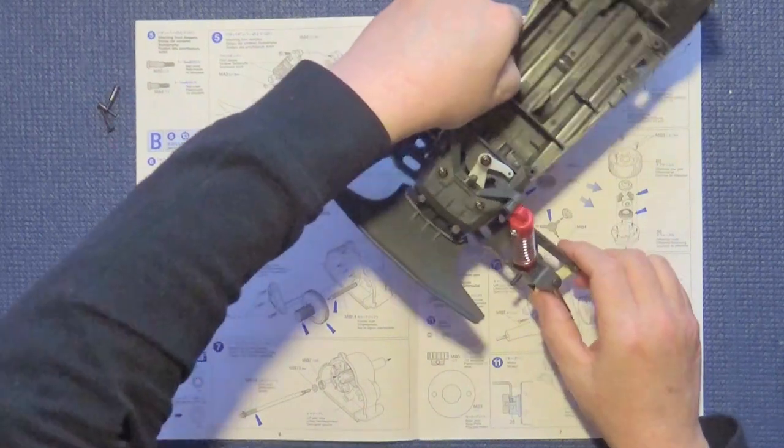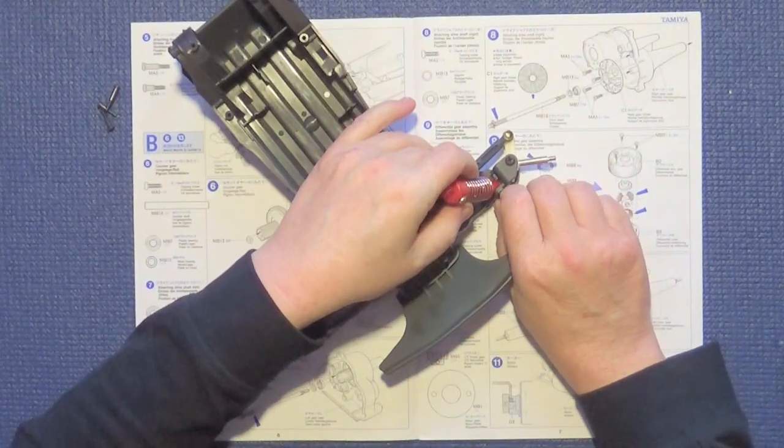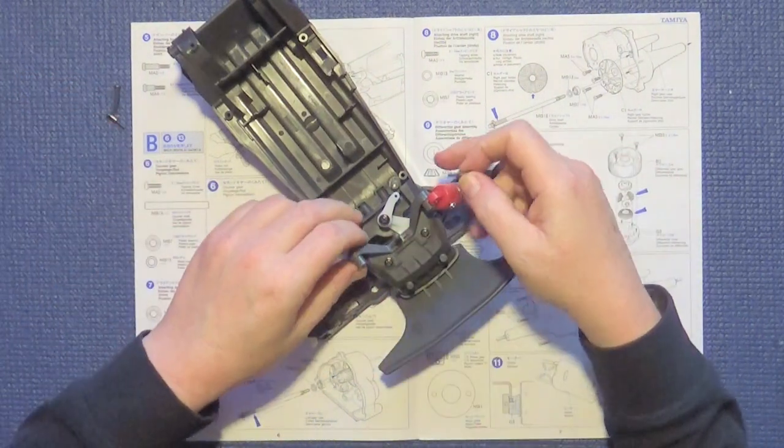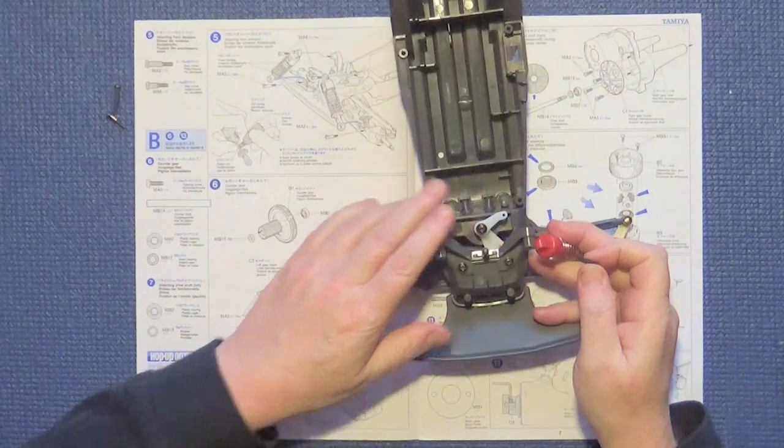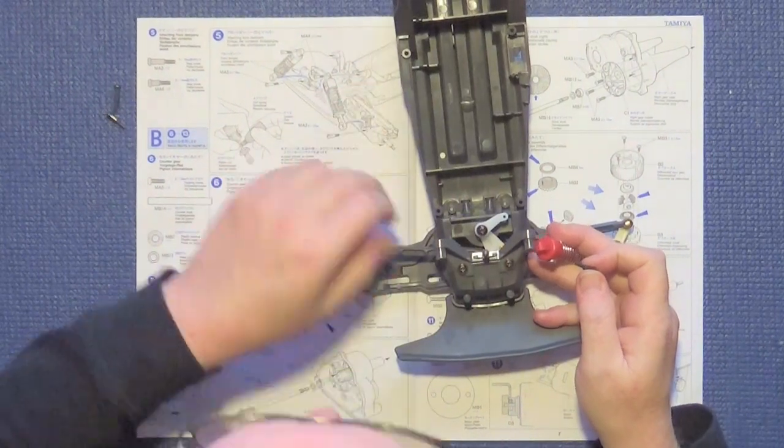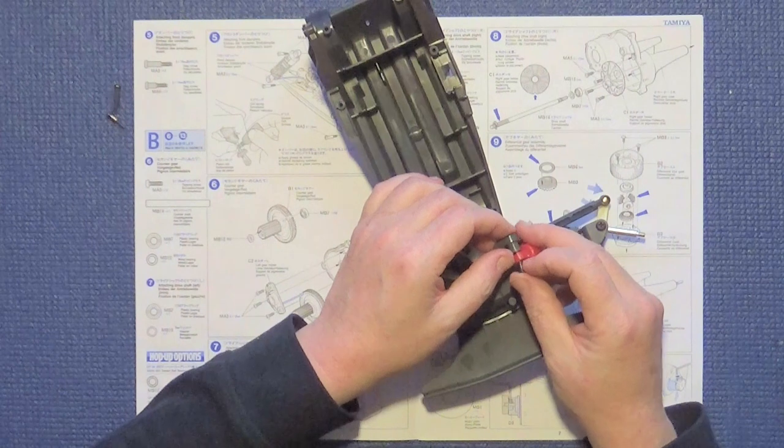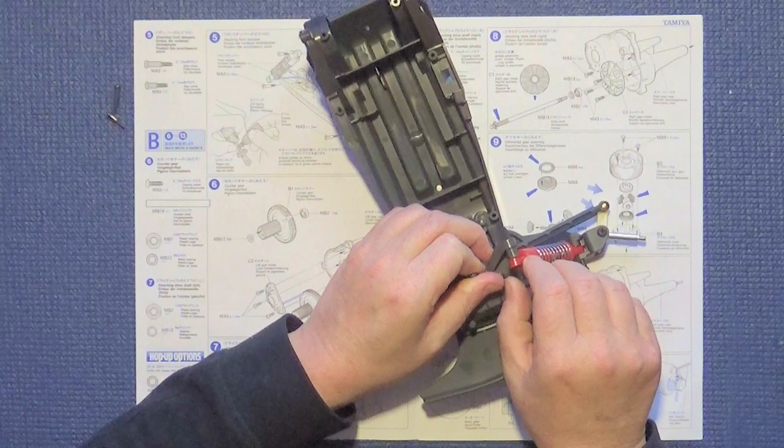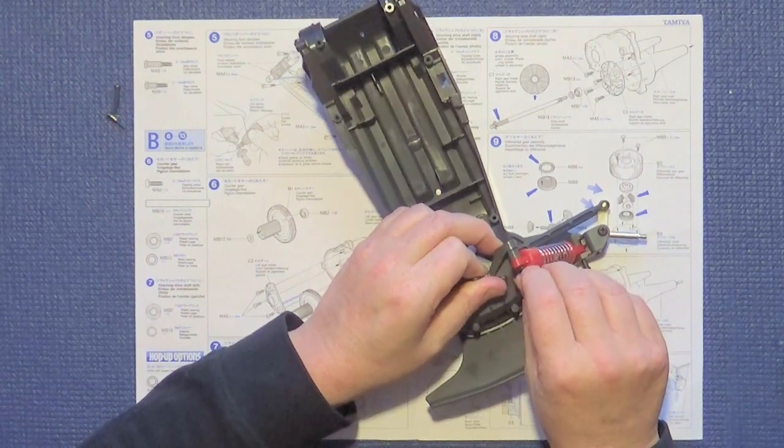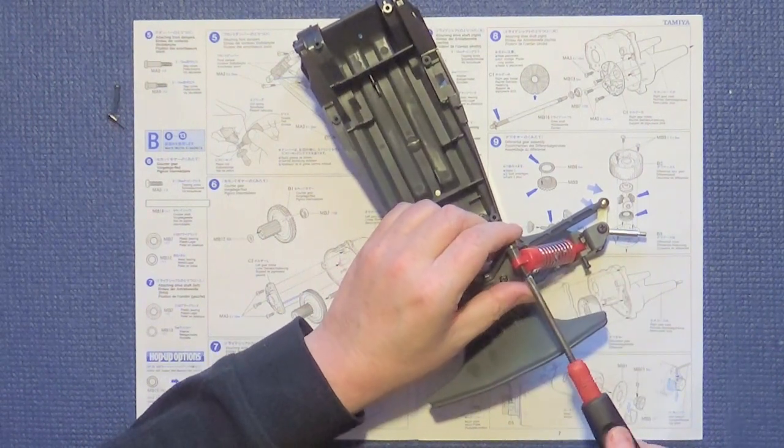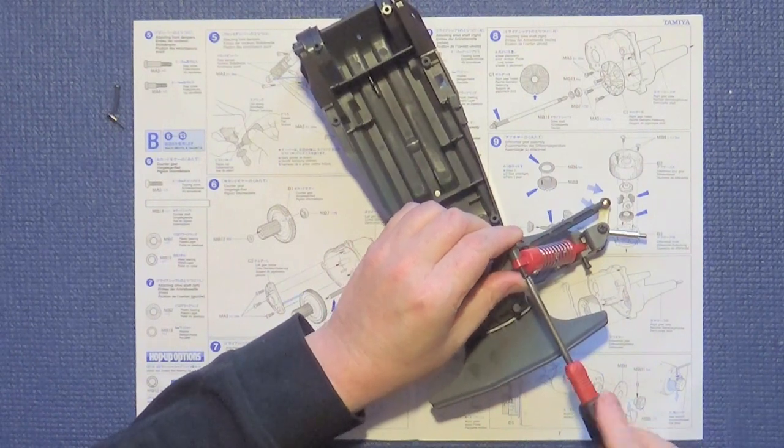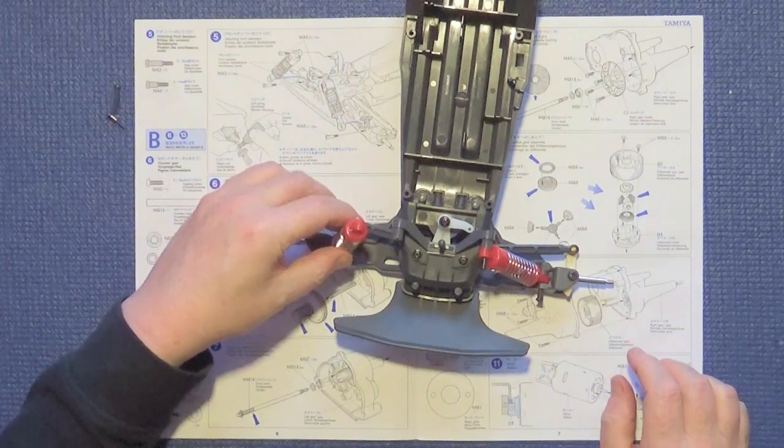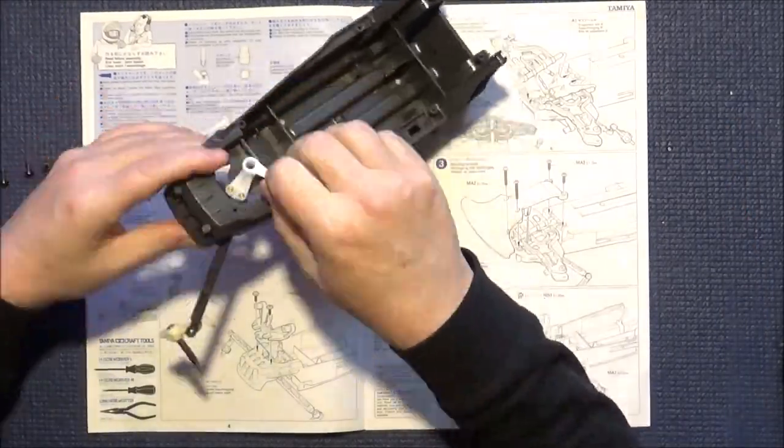Then we jiggle it about until we find the hole. Yep, the other side. And then the shorter step screw goes through and in the top mount there. Then we just need to repeat for this side.